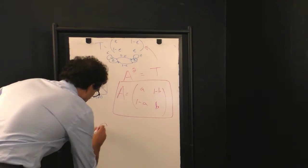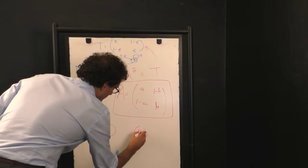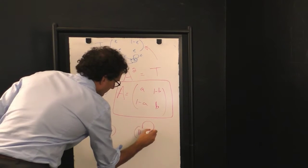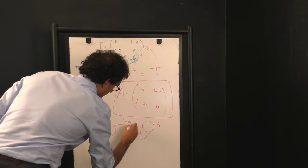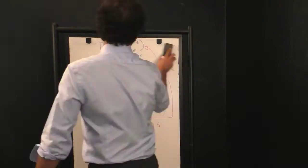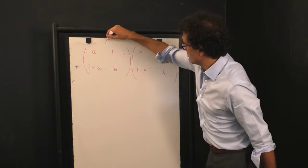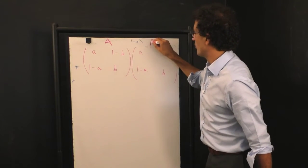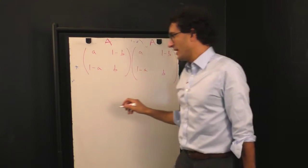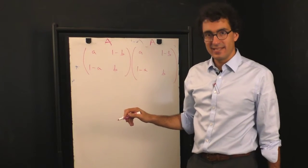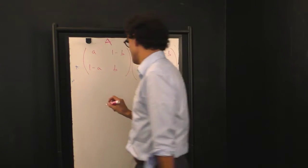So, our challenge becomes find A and B. Okay, let's do it. Here's our problem. We're going to square A, or multiply A by itself, and we're going to set that equal at the end to the transition matrix T. So, if we do that multiplication,